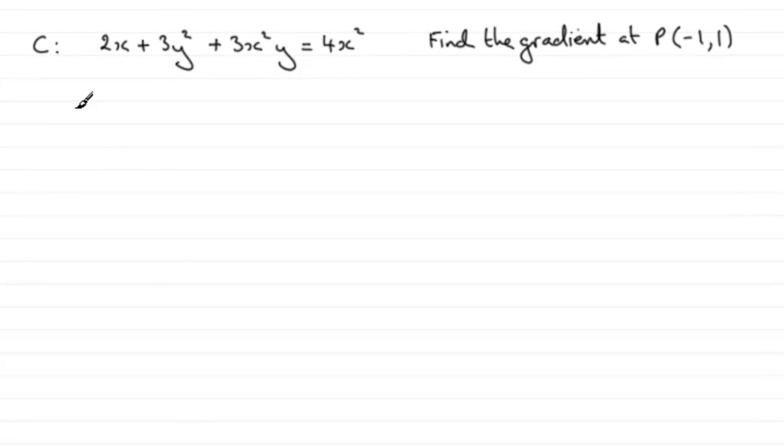Now for this part, we're given that a curve C has this equation: 2x plus 3y squared plus 3x squared y equals 4x squared. And what we've got to do is find the gradient at the point P, which has coordinates minus 1, 1.